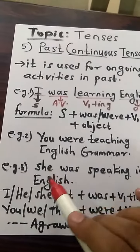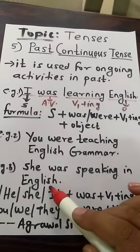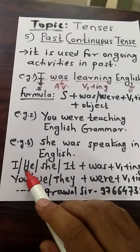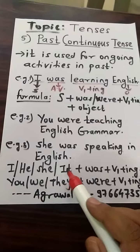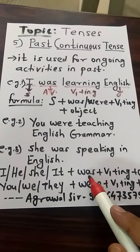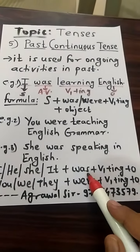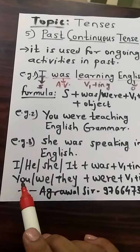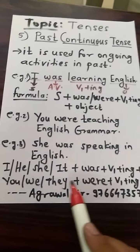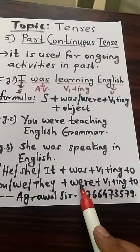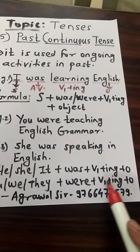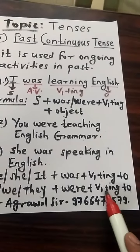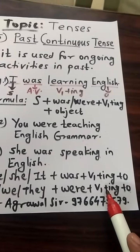Example 3: She was speaking in English. For pronouns like I, he, she, or it, we use the auxiliary verb 'was' — W-A-S — plus V4 plus object. For other pronouns like you, we, or they, we use 'were' — W-E-R-E — as the auxiliary verb plus V1 plus ing plus object. This V1 plus ing is treated as V4, that is present participle.